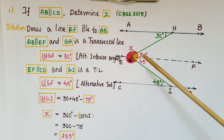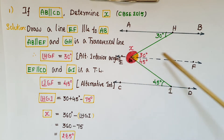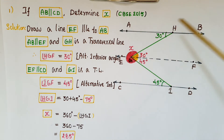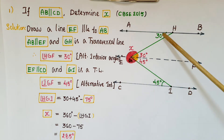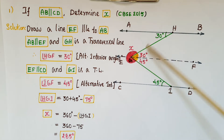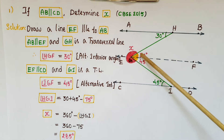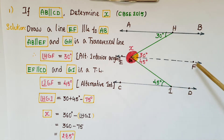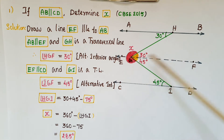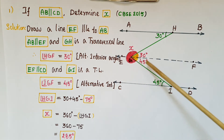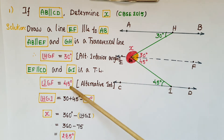The two angles given are 30 degrees and 45 degrees. We have to find x. First, draw a line EF parallel to AB, so AB is parallel to EF. The transversal line is HE. These two angles are alternate interior angles, so angle HGF is 30 degrees. Again, EF is parallel to CD, so these two are also alternate interior angles — that angle FGI is 45 degrees.